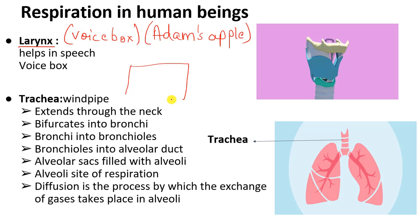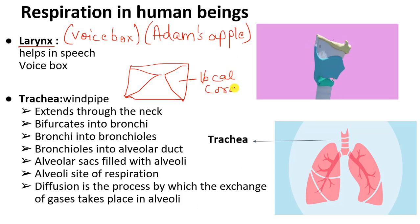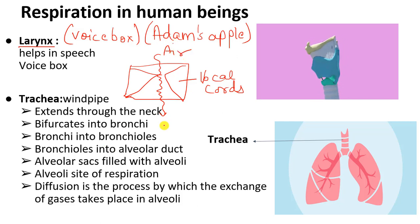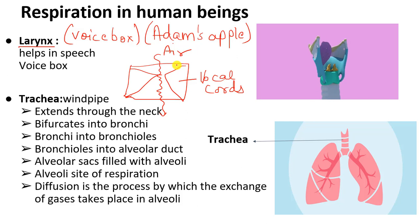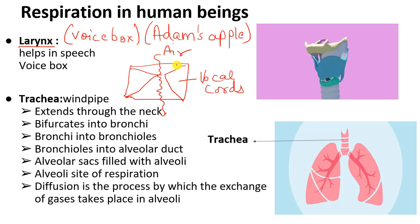Inside this voice box, there are two vocal cords. When air enters between the vocal cords, they vibrate, and because of the vibration of the vocal cords, sound is produced. Just like bands have something they bang against each other to produce sound, these vocal cords vibrate against each other when air passes through them. Sound is produced because of the vibration of the vocal cords, and hence this box is called the larynx.